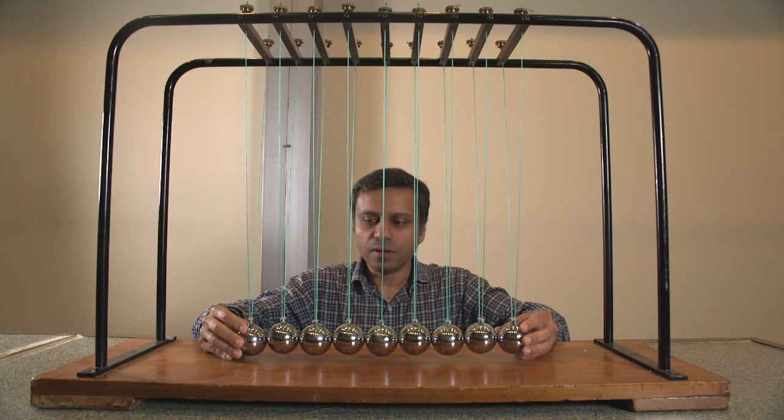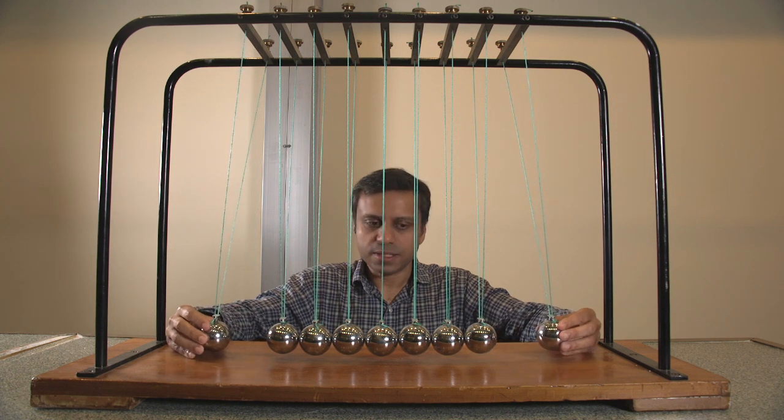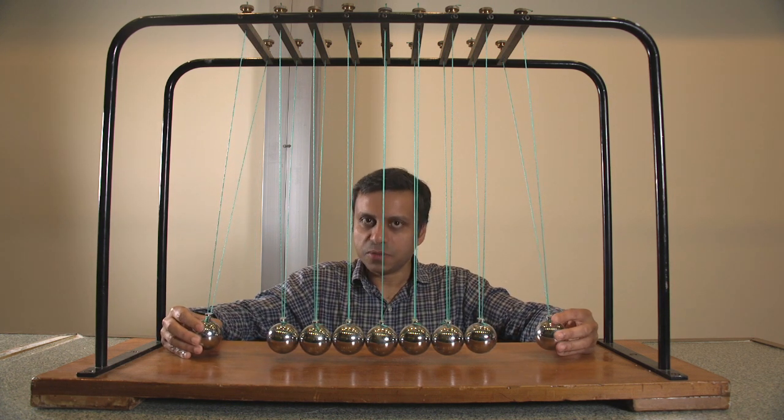Let me do a slightly different case. I pull both of these bobs away from each other. And that means their velocities will be opposite initially.